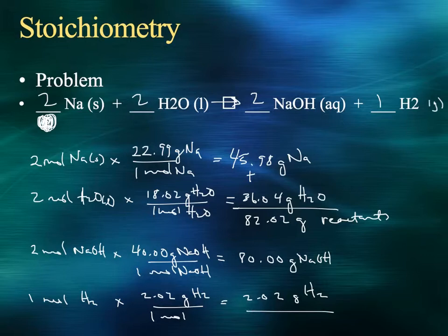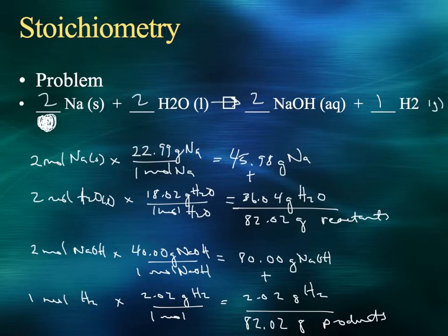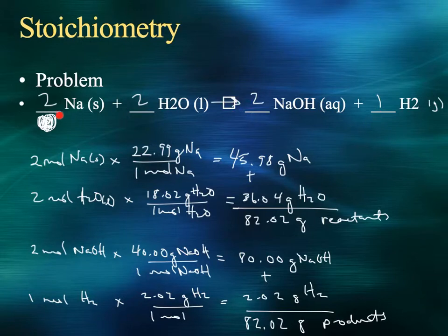Checking the products: 2 moles of NaOH times 40.00 g/mol gives 80.00 grams of sodium hydroxide. One mole of H2 times 2.02 g/mol gives 2.02 grams. Adding those together: 82.02 grams in the products. Sure enough, the mass is conserved. The most important part was knowing our number of moles from the coefficients — without that, we couldn't confirm that the mass in reactants and products is equivalent.